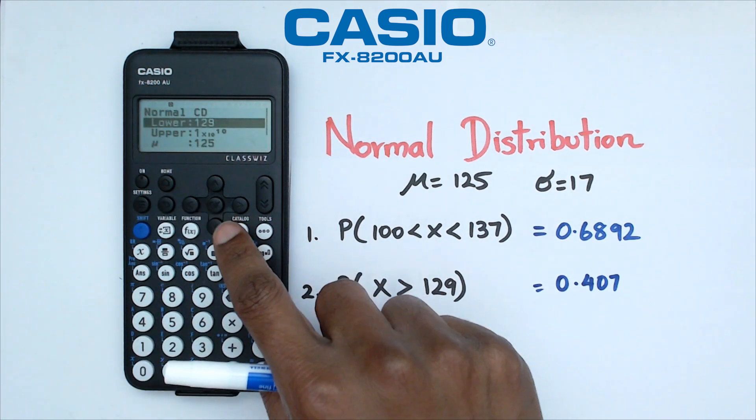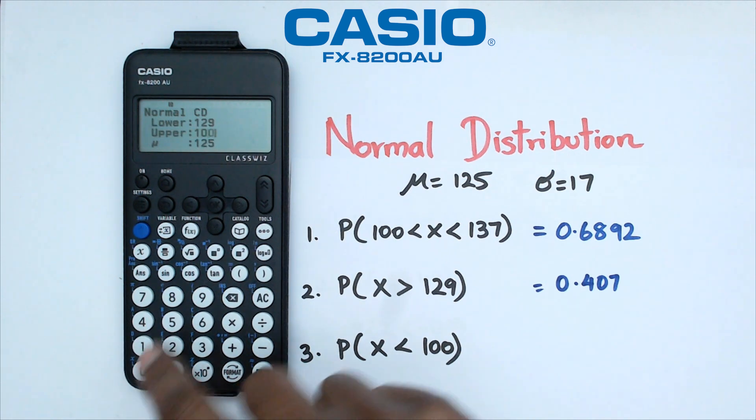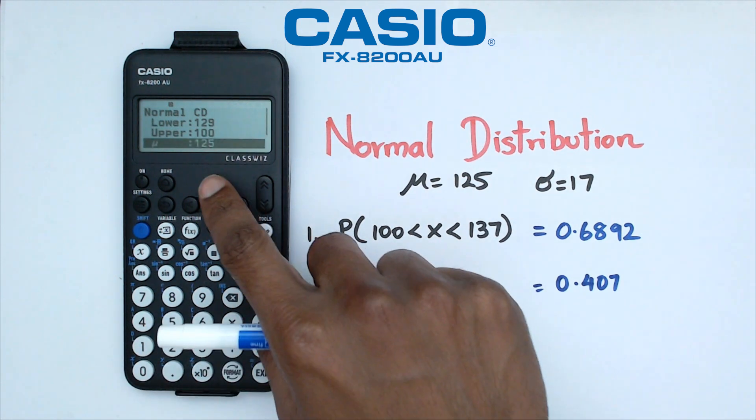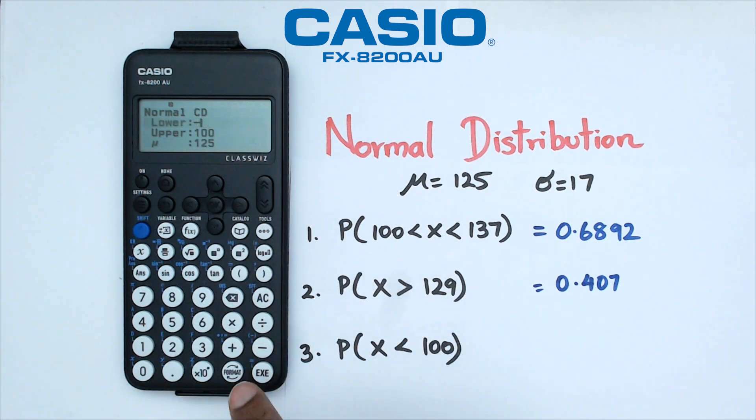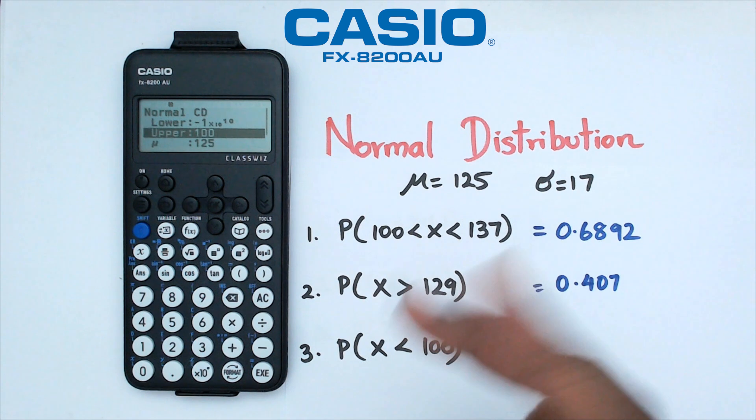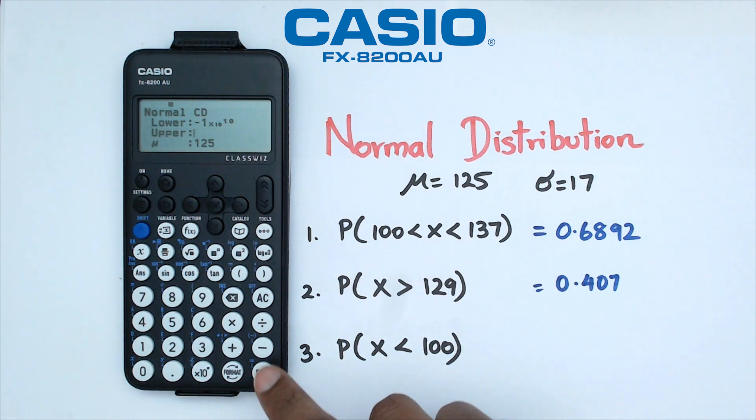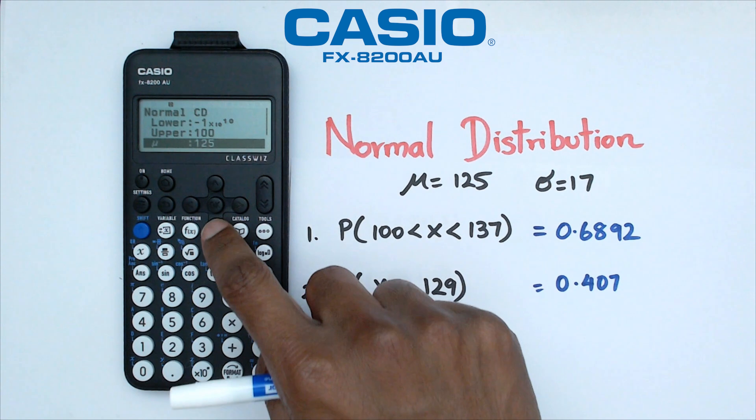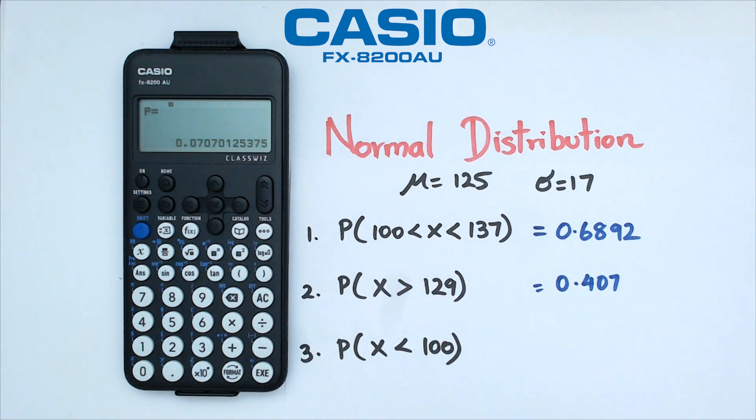So in this case, our upper limit is going to be 100, and then our lower limit is going to be minus 1 times 10 to the power of 10. Some people might like to argue with this, like you don't need to put such a big number, but I just like to play it safe here. We've got an upper number as 100, that's all done, and we're going to click Execute. What we've got here is a probability of 0.0707.